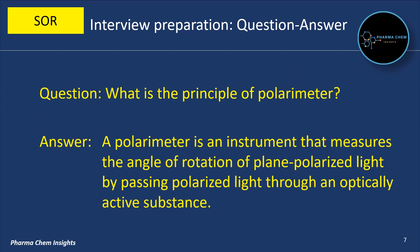A polarimeter is an instrument that measures the angle of rotation of plane polarized light by passing polarized light through an optically active substance.